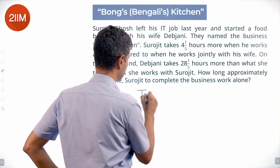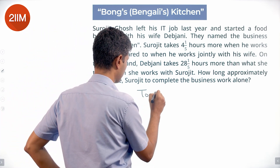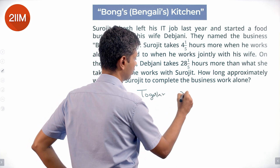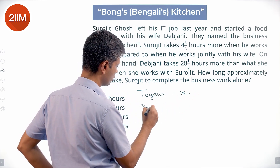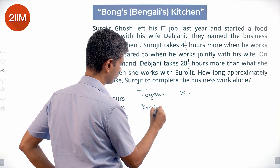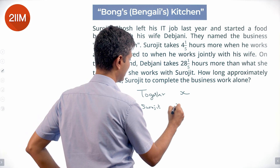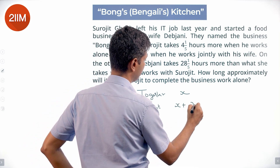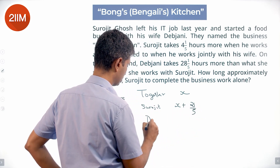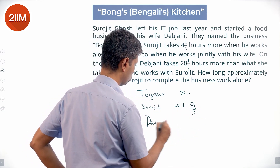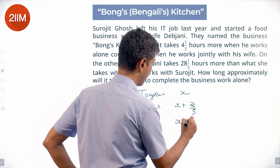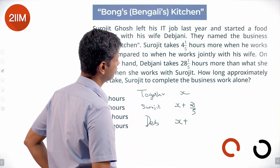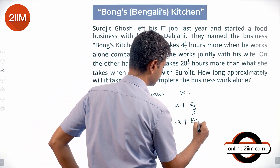Let's say together they take X hours. Then Surajit alone will take X plus 21/5 hours, and Debjani alone will take X plus 28⅕, which is X plus 141/5 hours.